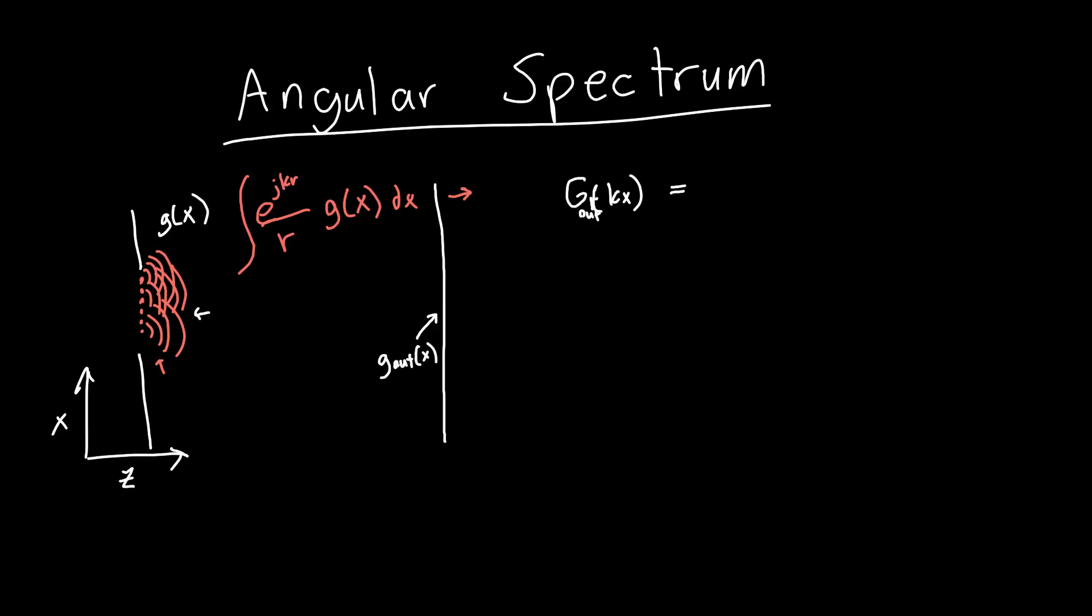We can calculate that just by multiplying gn of kx. So we take the Fourier transform of this aperture function. In the case of just a plain open aperture like this, which looks like a rectangle function, it's going to look like a sinc, so it's going to look like this sinc function. We just take the Fourier transform and we multiply it by this transfer function h, a free space.